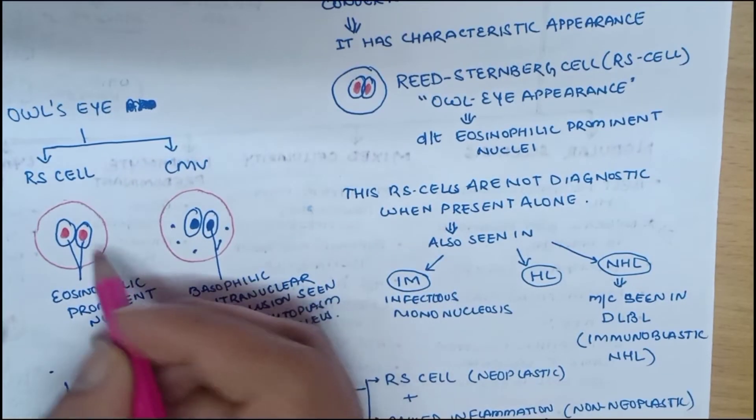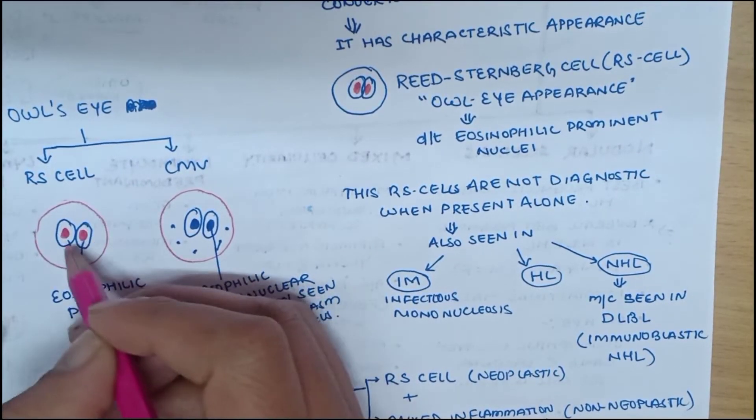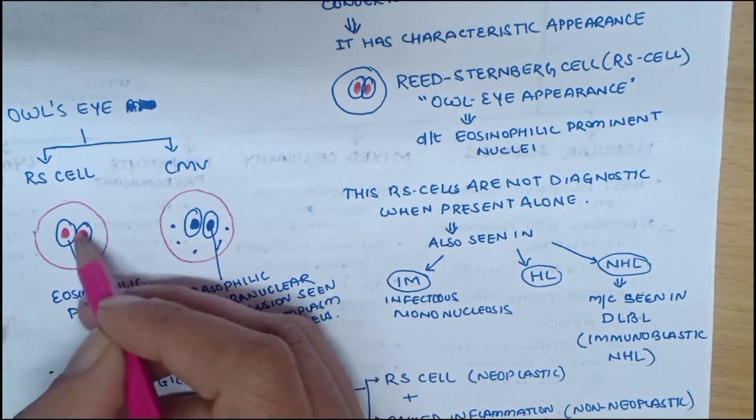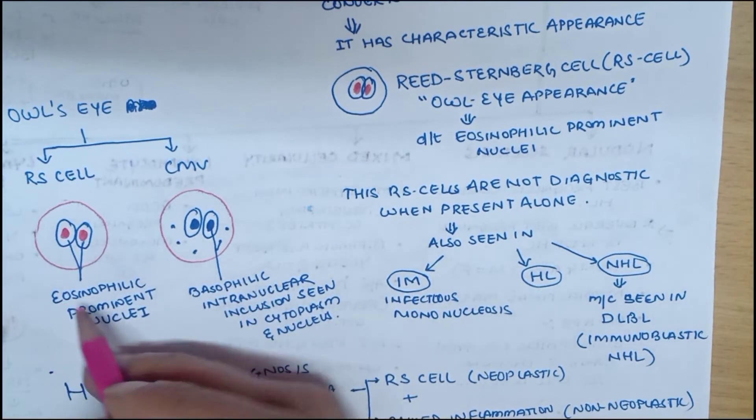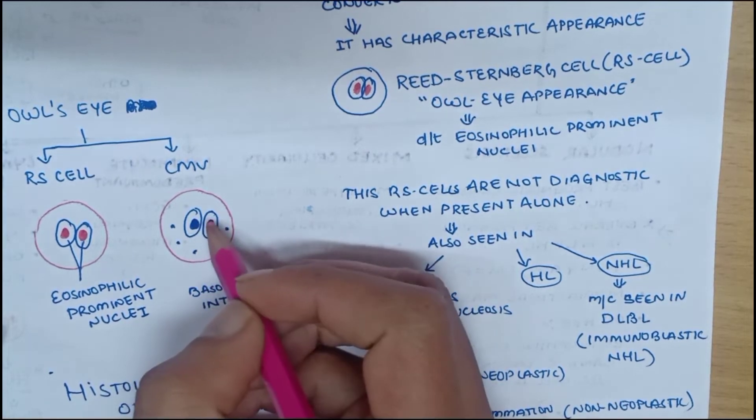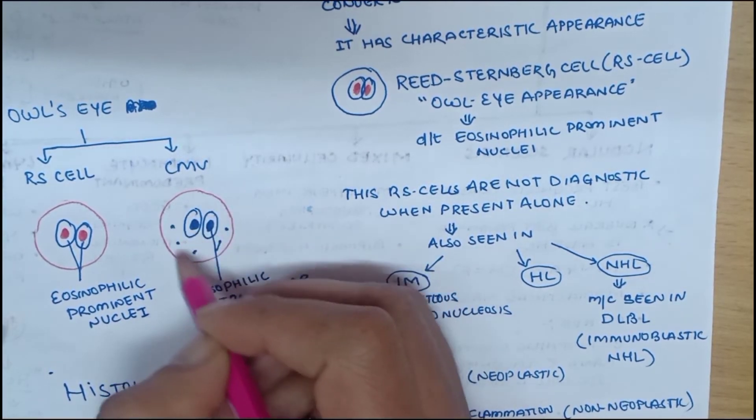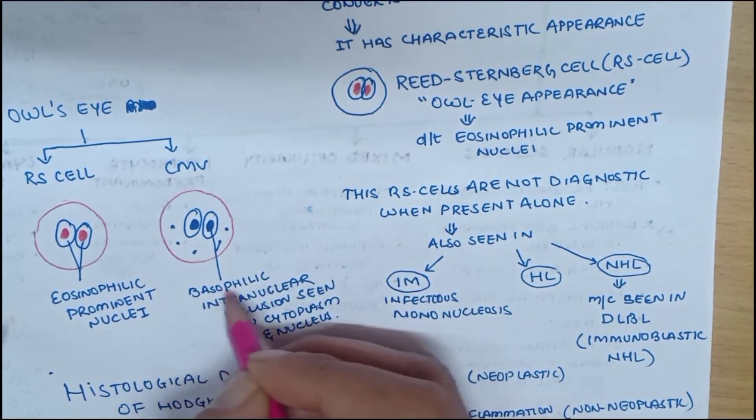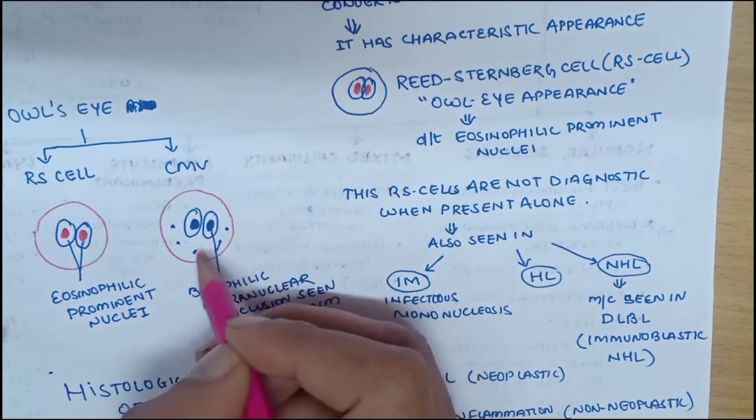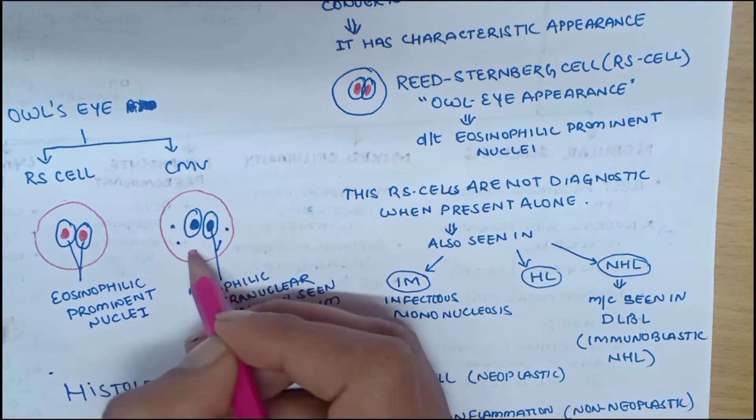The difference is that in Reed-Sternberg cells there is eosinophilic prominent nuclei, whereas in cytomegalovirus there will be basophilic intranuclear inclusion which is seen in the nucleus as well as in the cytoplasm.